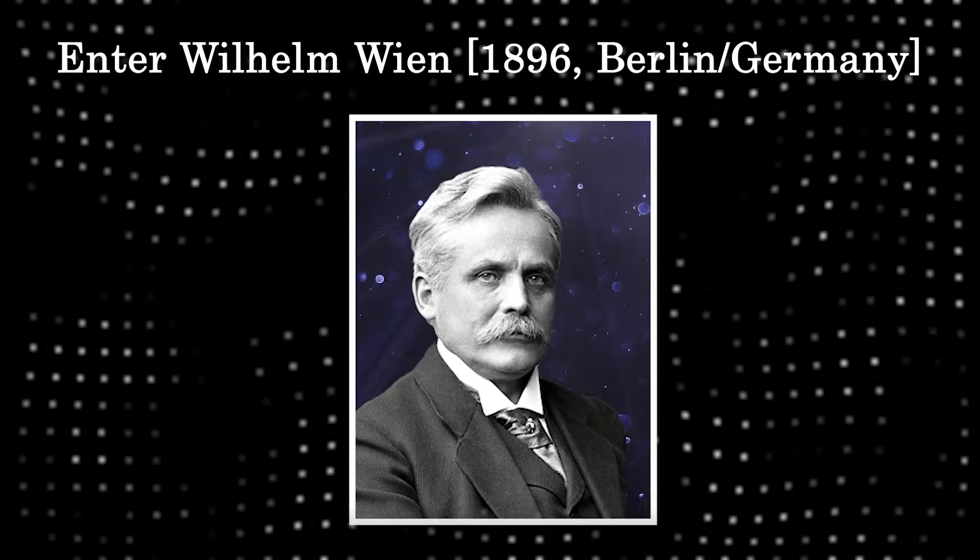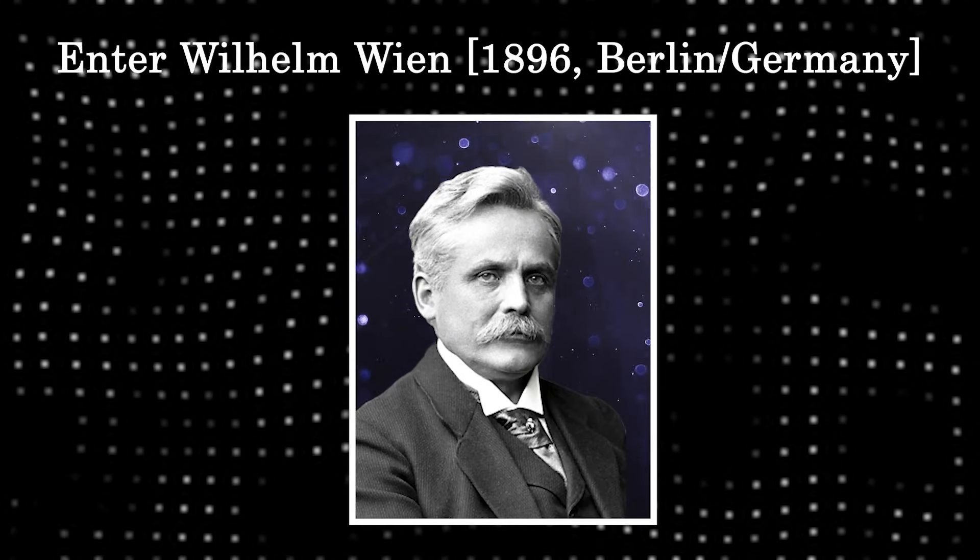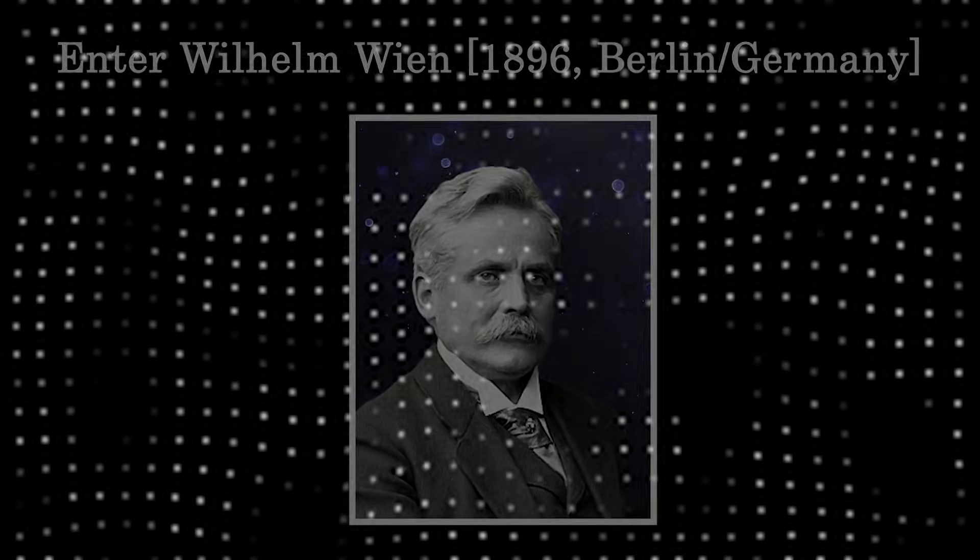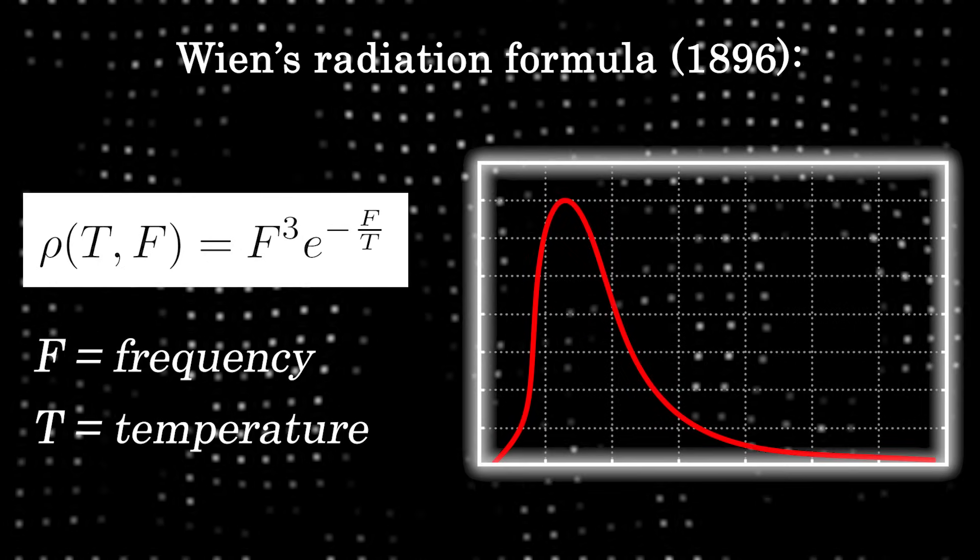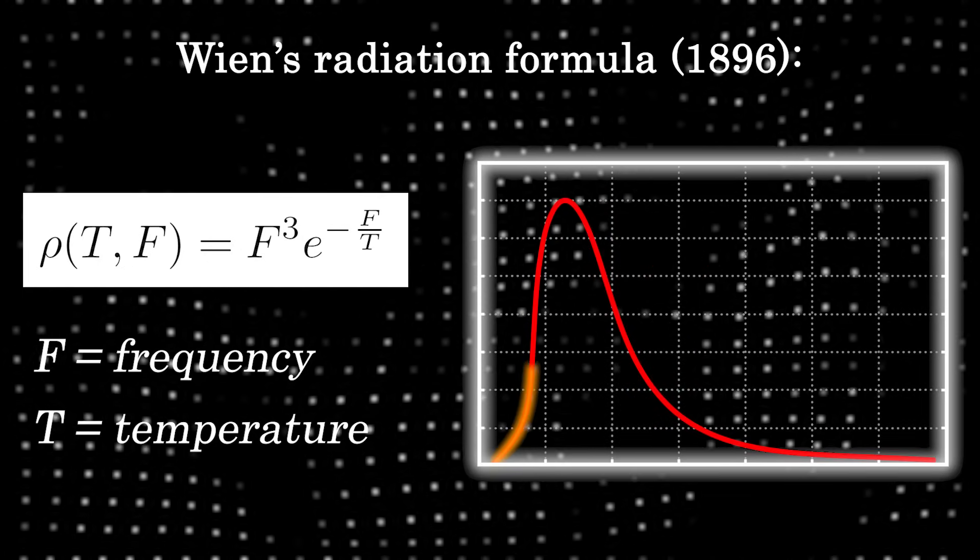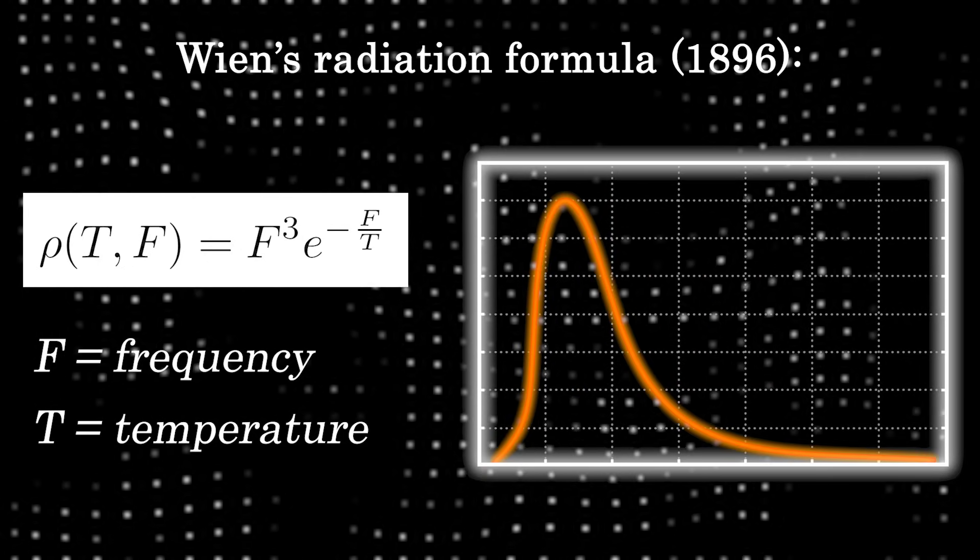Many attempts were made to find Kirchhoff's universal function, but German physicist Wilhelm Franz Wien first came close. In 1896, Wien discovered a radiation law that fit the experimental data so far. It seemed Kirchhoff's challenge had finally been met.